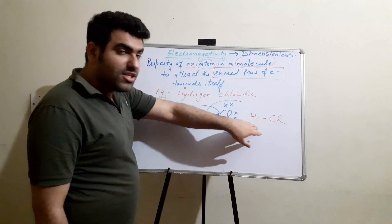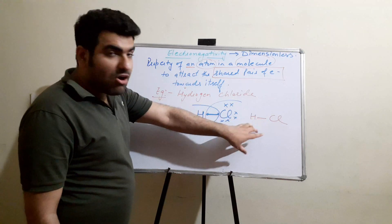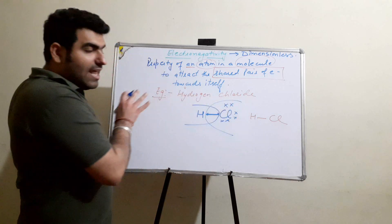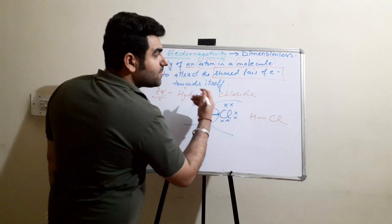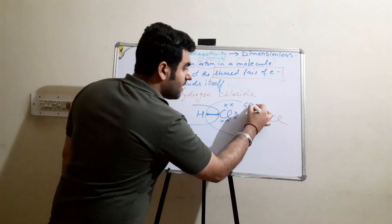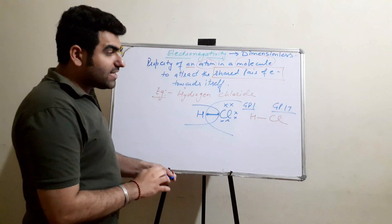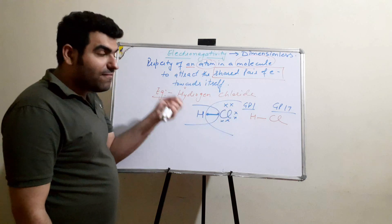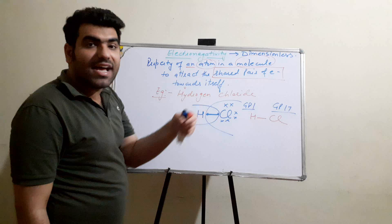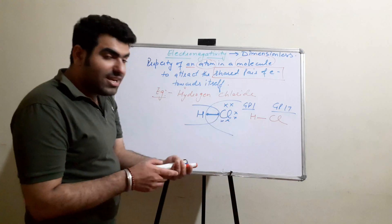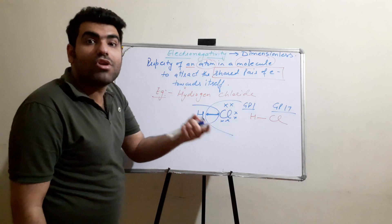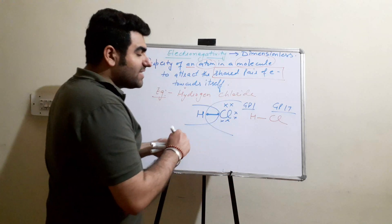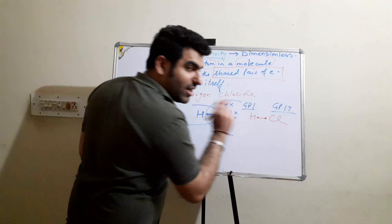Which of these two will attract the shared pair of electrons? Hydrogen is present on the left-hand side of the periodic table in group 1, and chlorine is on the right-hand side in group 17. Moving from left to right, atomic size decreases. So chlorine has a lesser atomic size and more nuclear charge, while hydrogen has a greater size and less nuclear charge.